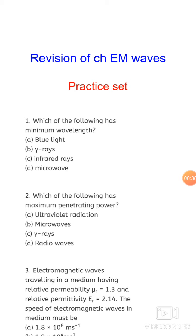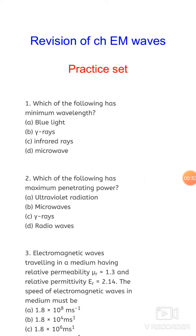It is a small chapter with small topics, but there are questions about the wavelength of waves, the spectrum, and a lot of questions on frequency. So there may be confusion about wavelength or frequency. When four options are given, it is tough to select one. You have to practice this so that you don't have any confusion about which option is correct.